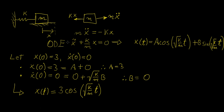This is the ODE that we're trying to solve. We have the second derivative here with respect to time, and then we have the solution itself here. This is a homogeneous linear second order differential equation with constant coefficients, because both the mass and the stiffness of the spring are constants. Essentially, this is what your general solution would look like analytically.